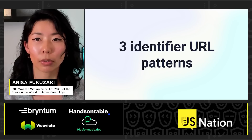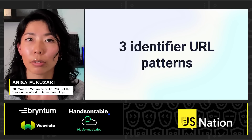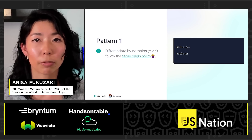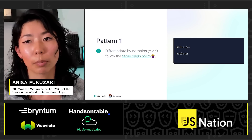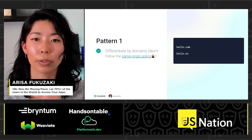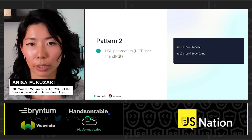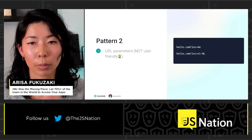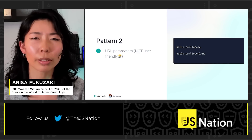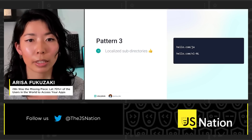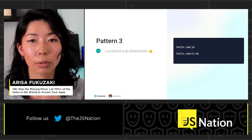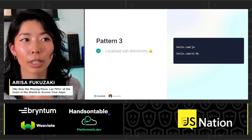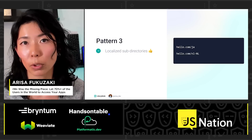I'm going to show you three patterns to identify locales in URLs. Pattern one is differentiating by domains, but it will not follow the same origin policy. Pattern two is using URL parameters, but it doesn't look user friendly. And the last pattern is localized subdirectories, which looks much cleaner and much more user friendly.